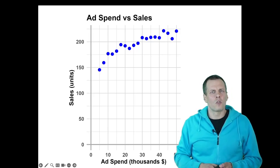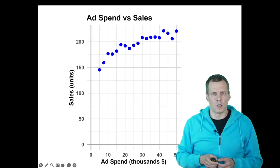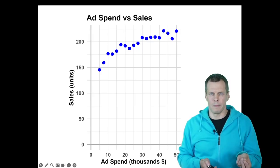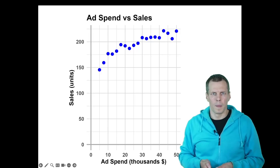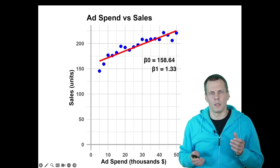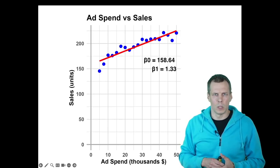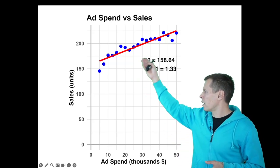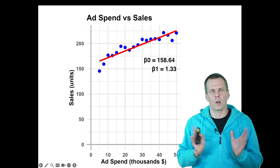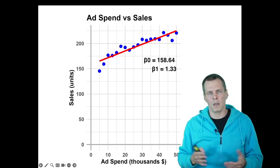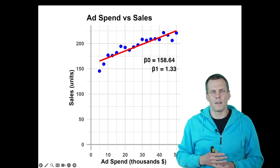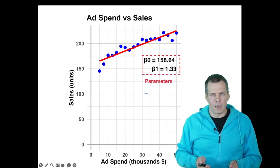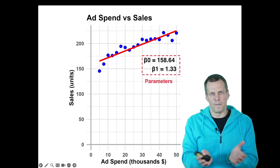The simplest way to model this data statistically is to use a regression model. A regression model happens to be the simplest statistical prediction model. The idea is that we try to explain this data with a line. We draw the line through the data. This line is defined by two parameters. These parameters define a model.